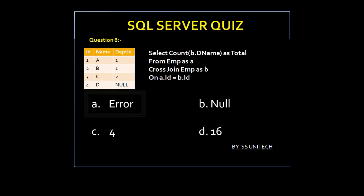Time up. Option A is true because we cannot use the ON operator with a CROSS JOIN. So option A is true.